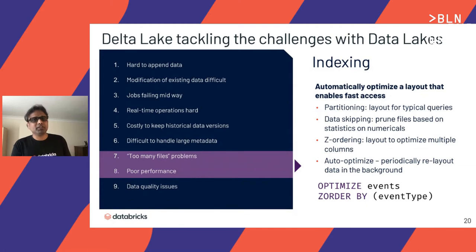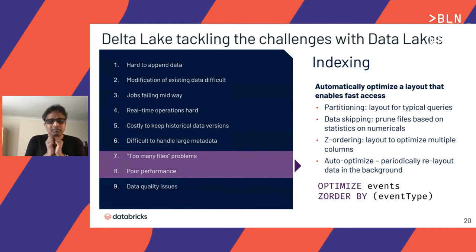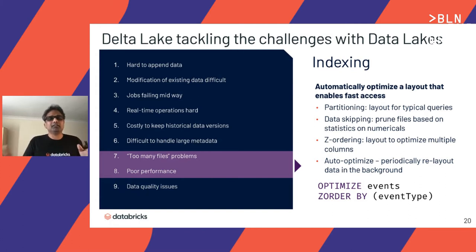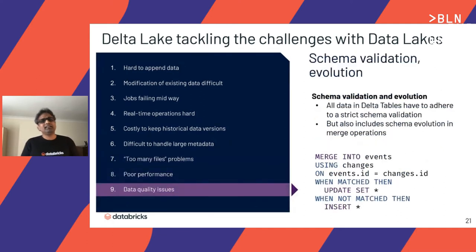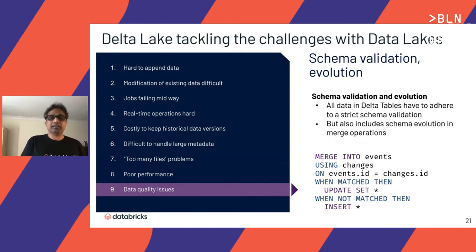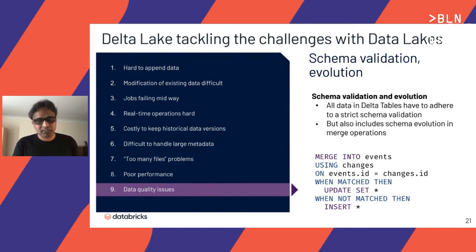The too-many-small-files problem is resolved elegantly with Delta: you can run a simple 'OPTIMIZE table_name' command, which bin-packs all data in a folder into ~1 GB files per partition. Data quality issues like schema validation and evolution are also supported by Delta, even in merge scenarios — which is exactly the topic we're discussing today: updates, deletes, and upserts on a Delta Lake table.